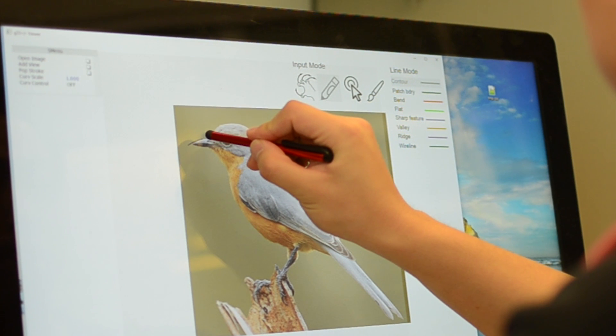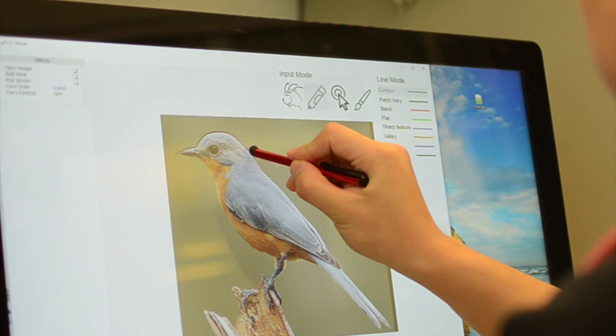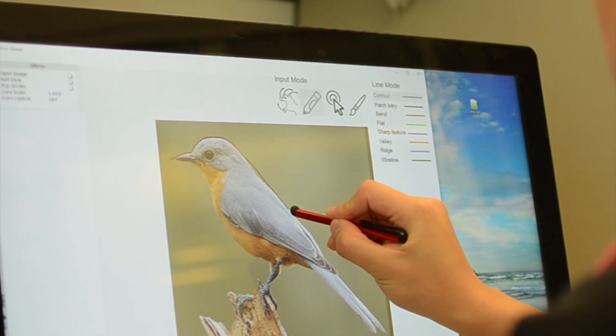Next, we show the live interaction of sketching and modeling through two examples. Typically, we draw strokes on a touch screen with a drawing pen.